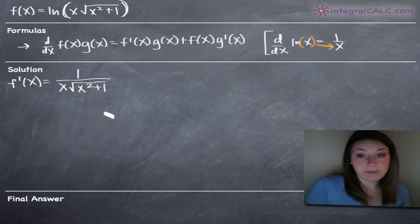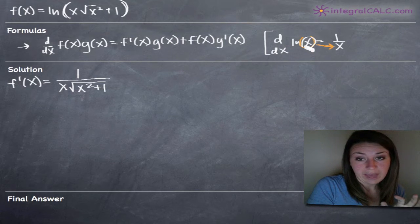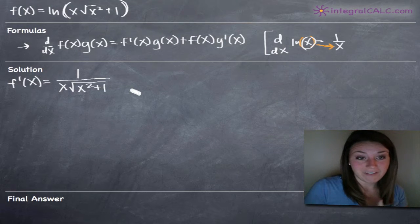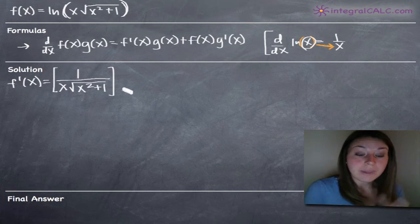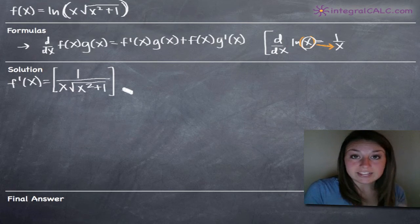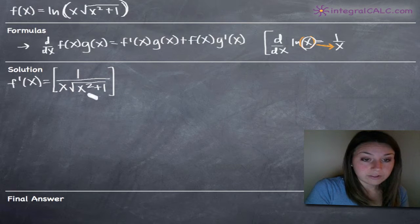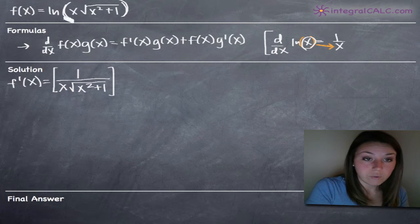Normally, that would be all we'd have to do if what was inside our natural log was just x. The formula deals with ln of x only. But what's inside our natural log function is much more complicated than just x, so after putting the inside in the denominator and 1 in the numerator, we also have to multiply by the derivative of what's inside the natural log.